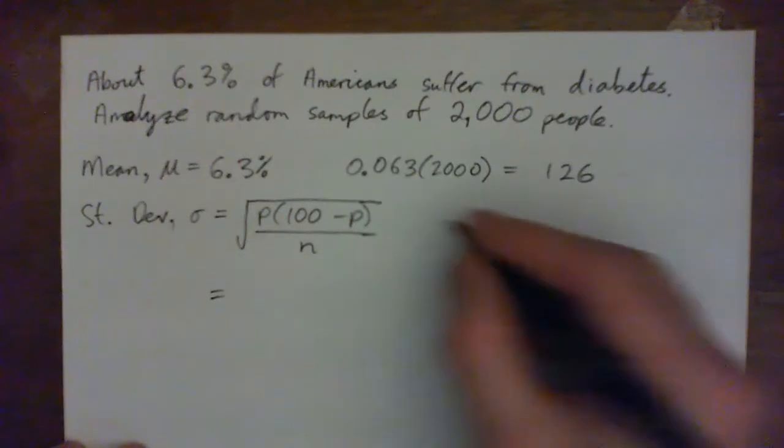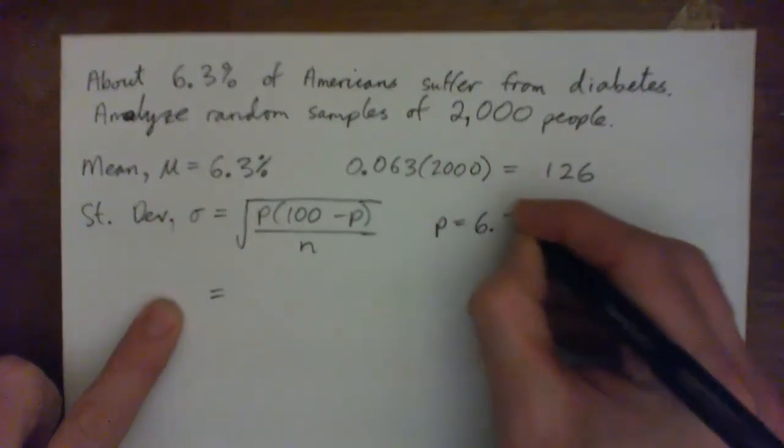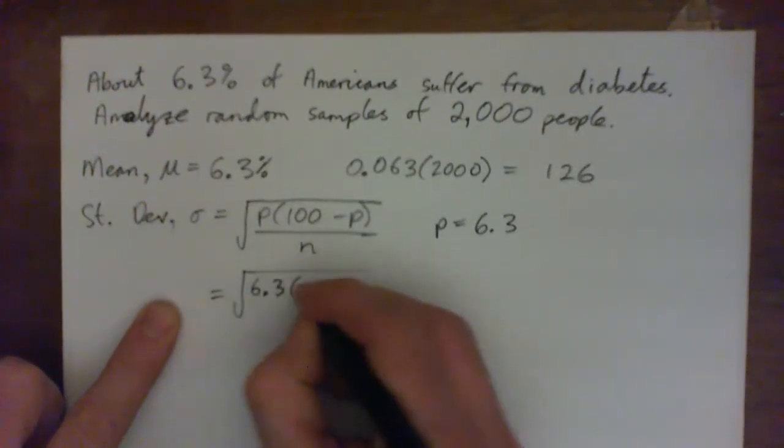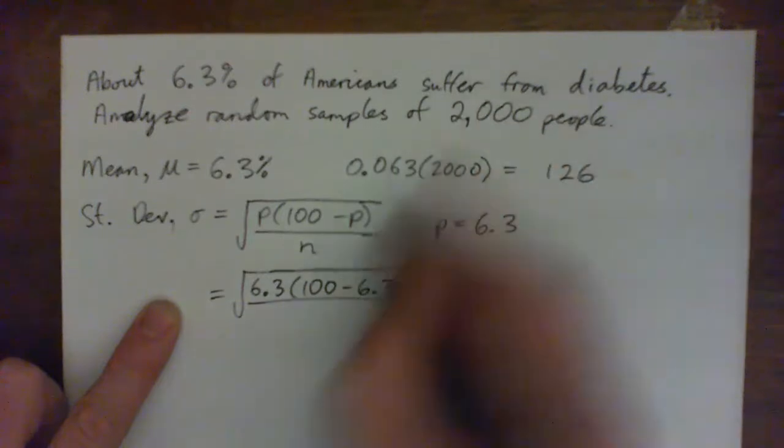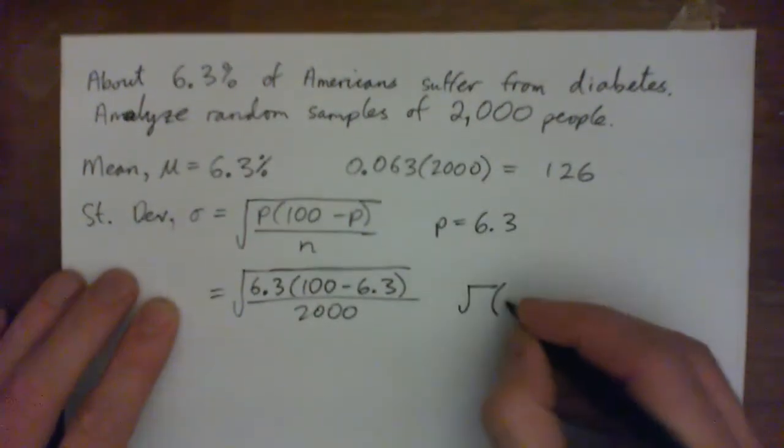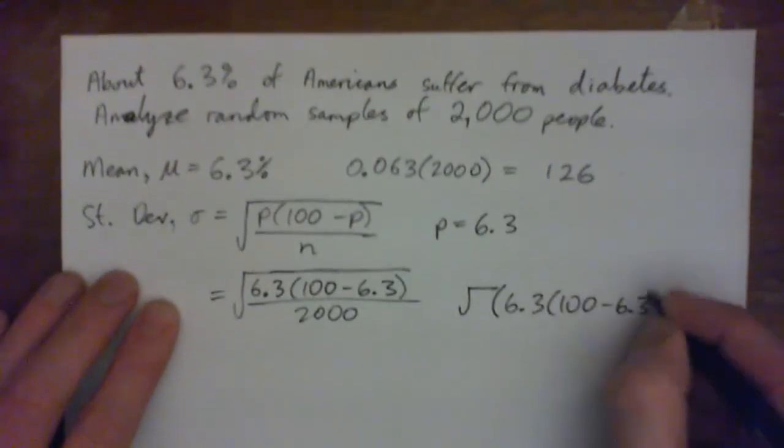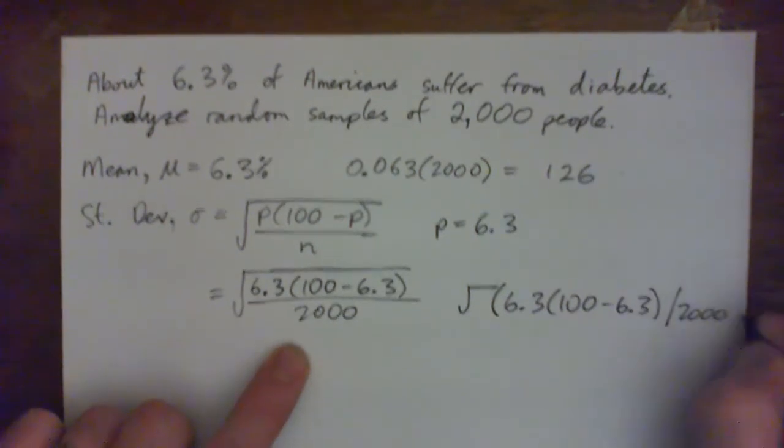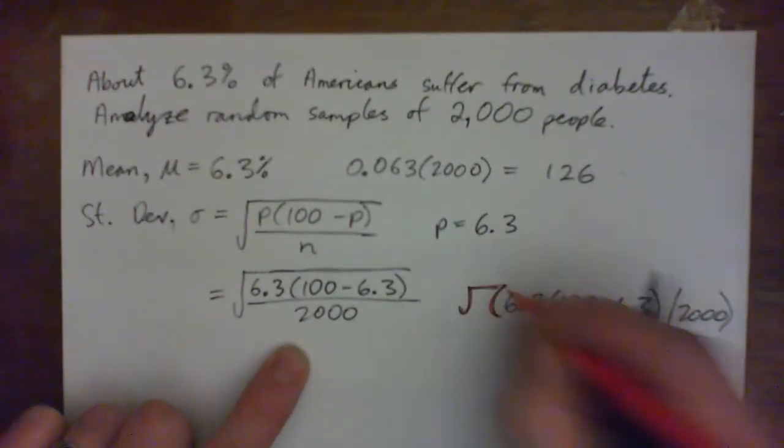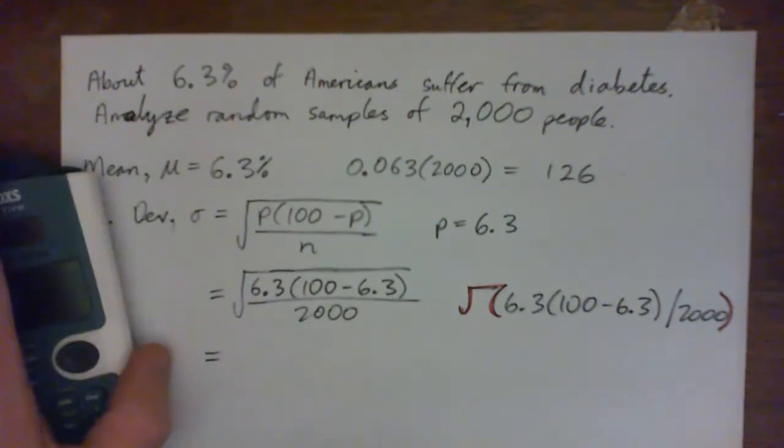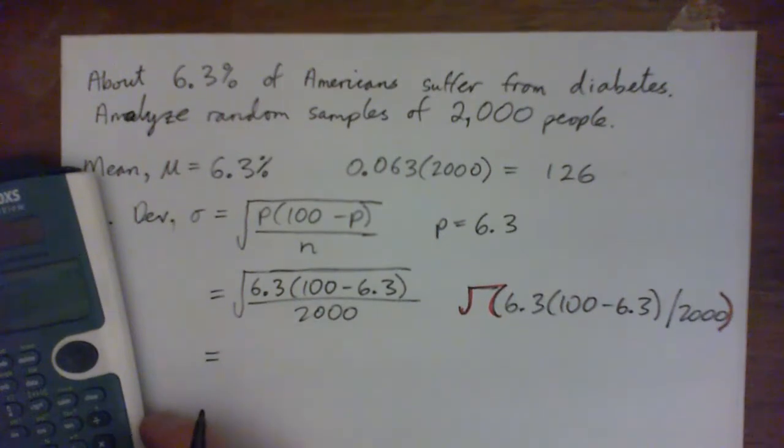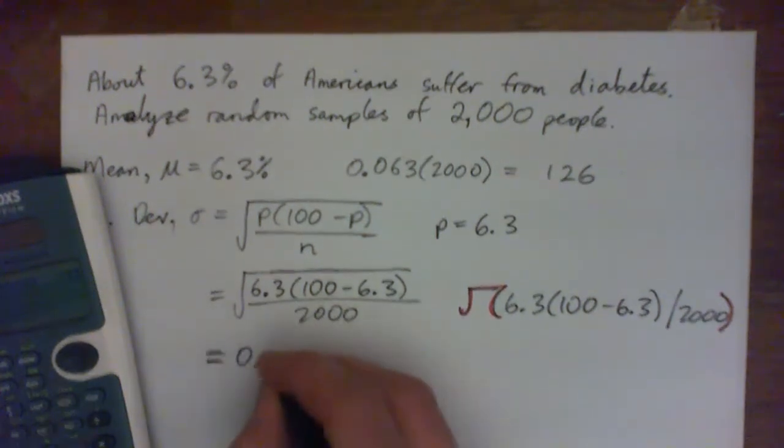Okay, I'm going to do it now, and I hope you press pause and try it at first, but P is just 6.3 in this formula. We just get the square root of 6.3 times 100 minus 6.3, all over N. And then N is our sample size, 2,000. And on the calculator, that's parentheses 6.3, parentheses 100 minus 6.3, close parentheses, divide by 2,000. And don't forget to close the parentheses for the calculator. And what does that turn out to be? 0.54. So this would all work out to be 0.54, right?